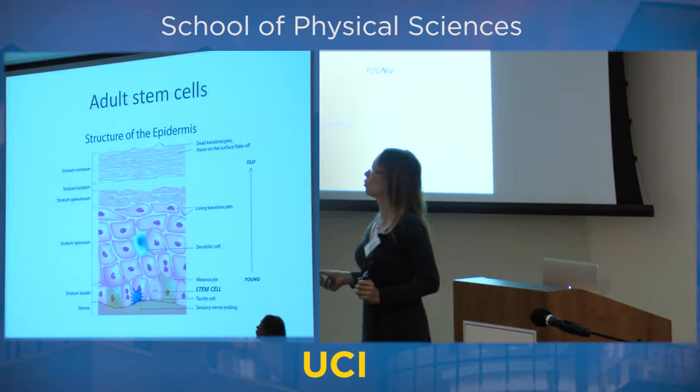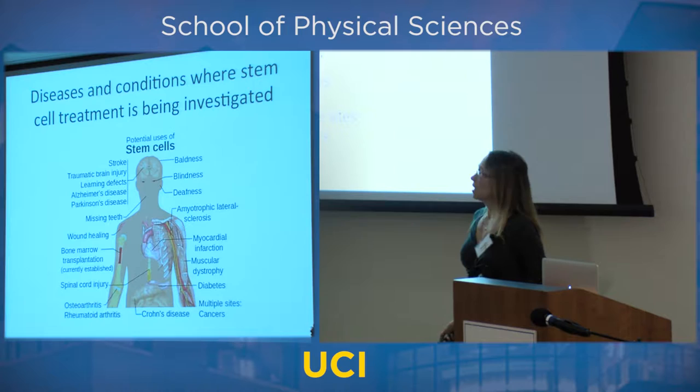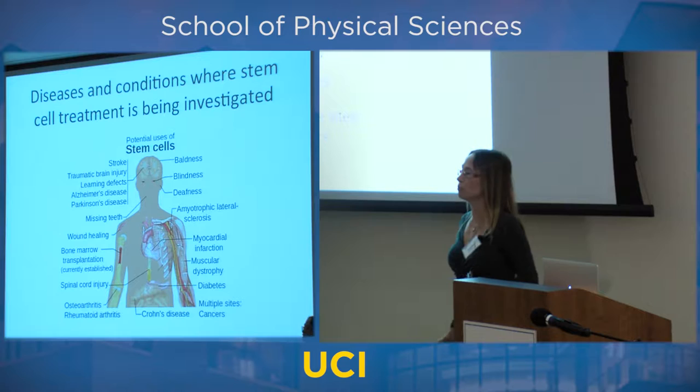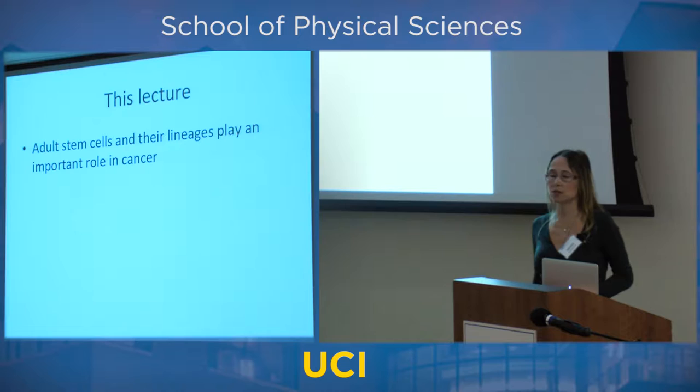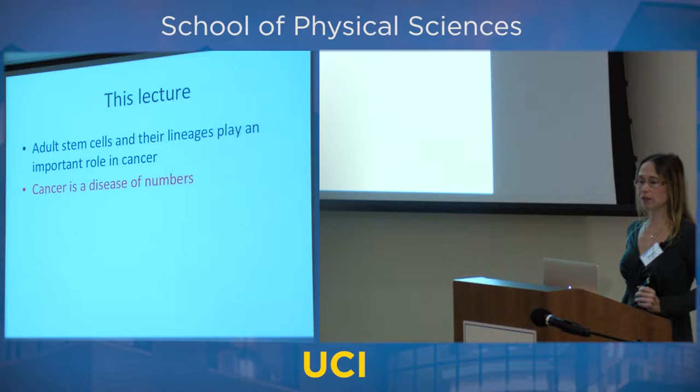The stem cell provides a blueprint of undamaged cells that can go on to divide and perform their functions. Stem cells are very useful — at the moment there is a lot of research on how to use them in medicine to treat various conditions. But today I'm going to concentrate on one aspect of adult stem cells: their involvement in cancer.